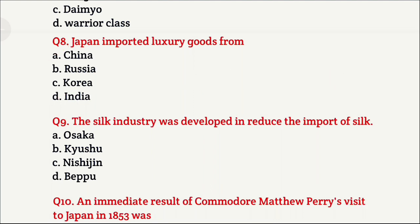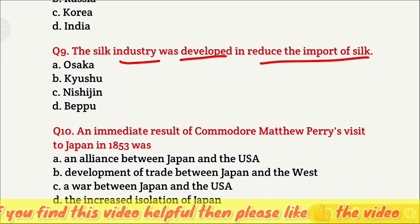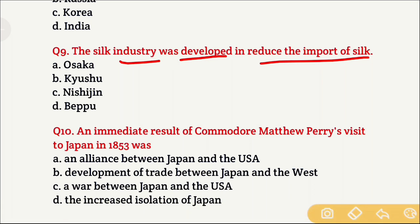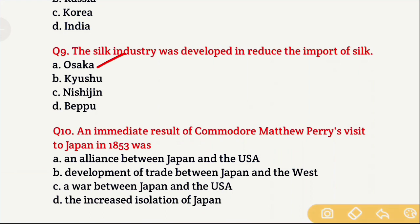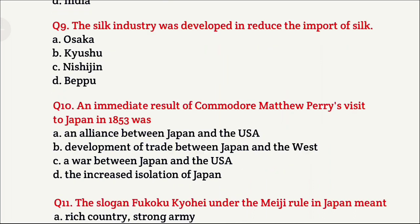Question 9: The silk industry was developed to reduce the import of silk. In which city was the silk industry developed in Japan? Option A is Osaka, Option B is Kyushu, Option C is Nishijin, and Option D is Beppu. The right answer is Option C, which is Nishijin.